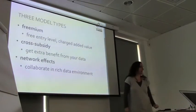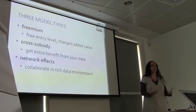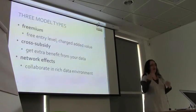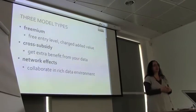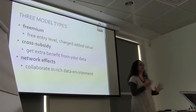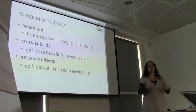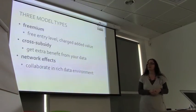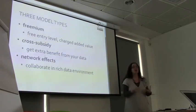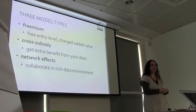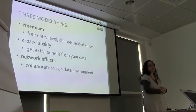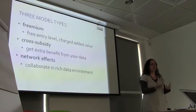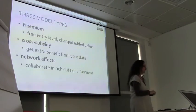I'm going to be talking about three basic types of model that people use when they're opening up data. The freemium model is basically that you have a free entry level of open data and then a paid level of added value data that you charge for, and you use that money to subsidize opening up the free level. The cross-subsidy model is that you get some extra benefit from opening up your data. And the network effects model means that you collaborate with other people to get better data that you can use in better ways.